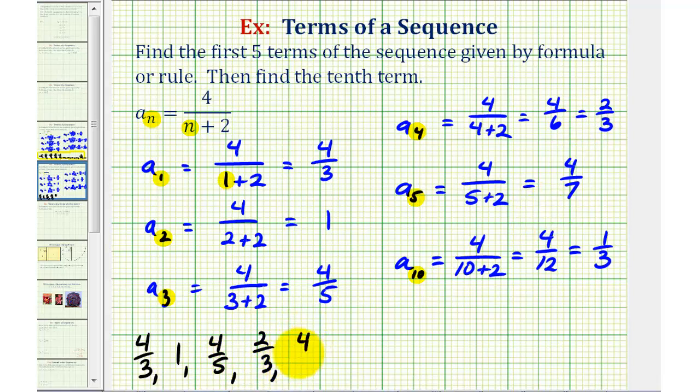Fifth term is four-sevenths. We didn't find the sixth, seventh, eighth, or ninth term, but the tenth term is one-third.